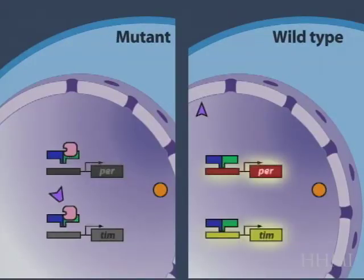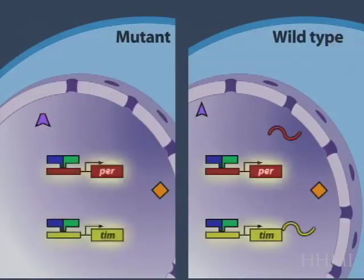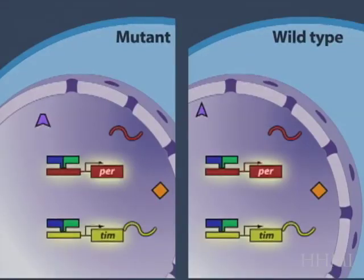It's working more slowly. This takes longer to go away. And as a consequence, the turning on of transcription the next day occurs more slowly in the mutant strain.